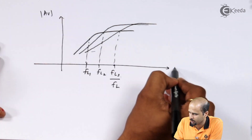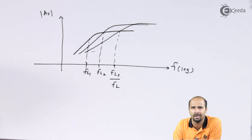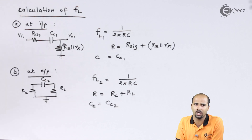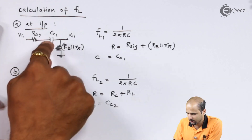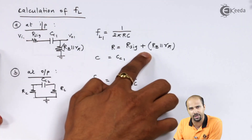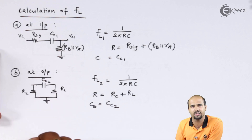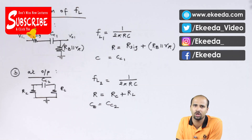As far as low frequency response is concerned, we calculated the value and went through the procedure of finding FL1, FL2, and FL3. Here is a quick trick for calculating R: take the capacitor, take the resistances on either side of it, and sum them up. For the input side, R-signal and RB parallel Rpi are just summed. Similarly at the output, RL and RC are taken and summed. That is the critical process for getting the exact value of FL. Stay tuned for Ikeda videos — learn more and more with me. Thank you so much.